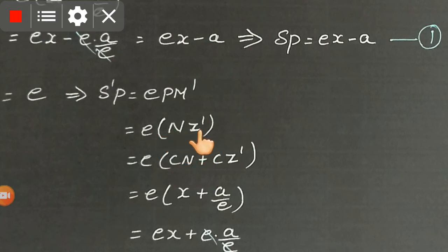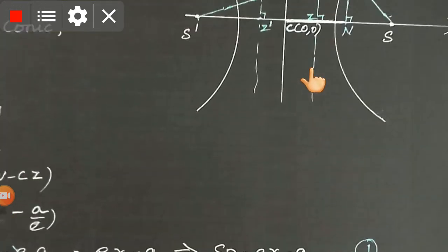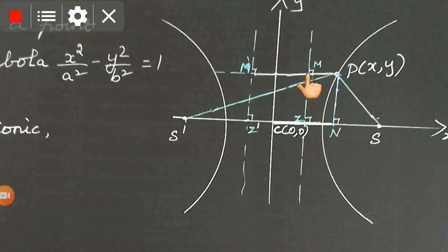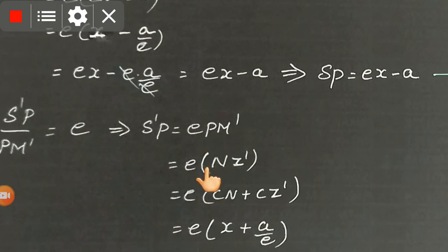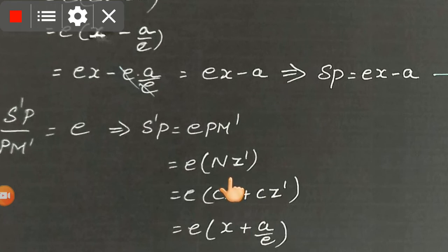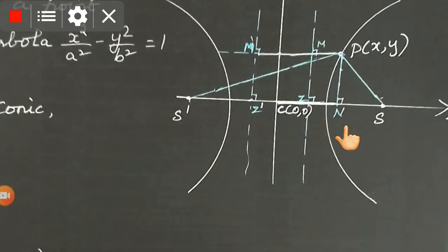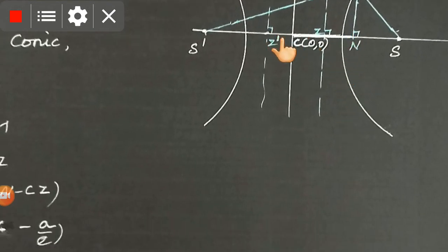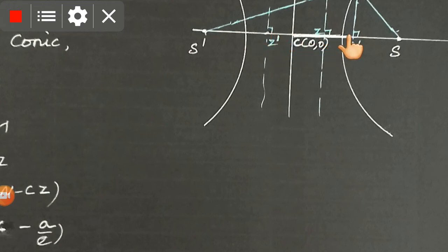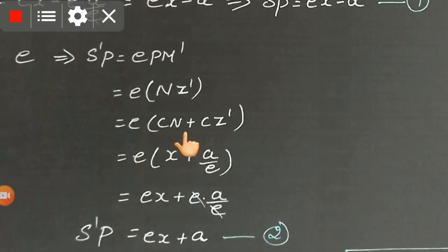Since the points lie on the X-axis, PM' equals NZ'. To find NZ' from the center, since Z' is on the other side, NZ' equals CN plus CZ'. This covers the full distance. CN plus CZ' gives us the total length NZ'.